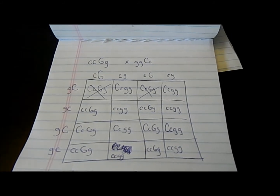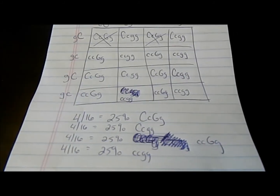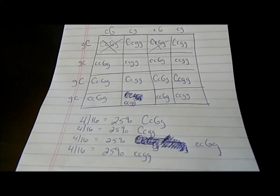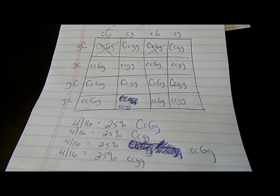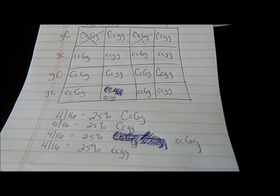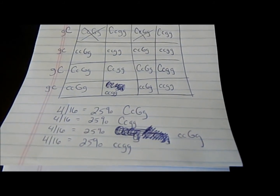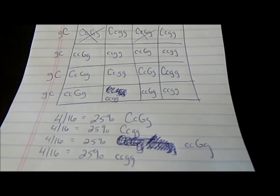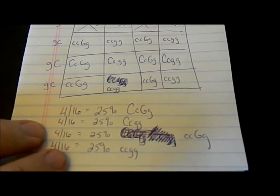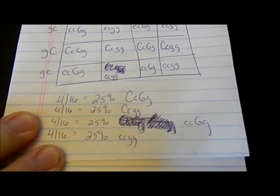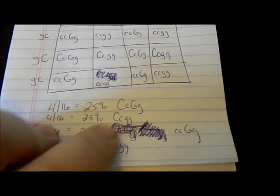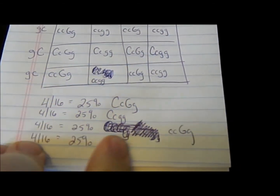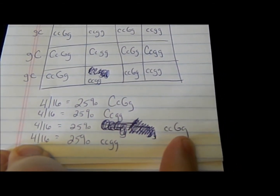After you've mapped out the grid — I made a couple of mistakes and crossed them out — you can see what you end up with. Four out of sixteen, which is 25%, are big C little c big G little g — that's double heterozygous, heterozygous for ghost and caramel. 25% are big C little c and two little g's — so that's a ghost het caramel. Here's caramel het ghost, and here's a caramel ghost.